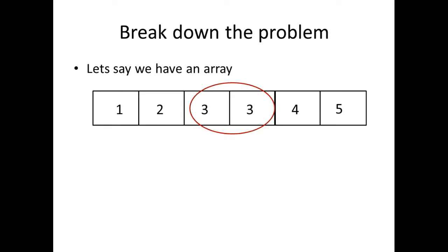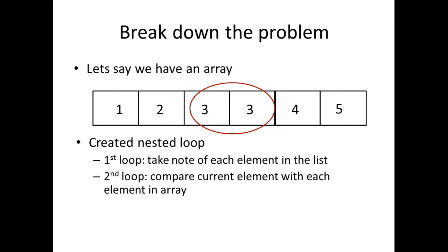How do we go about determining if an array has duplicate values? Well, the first thing that may come to mind is to create a loop. A loop would iterate through each element within this array, and we'll be able to take note of each element. But we want to think about this a little bit deeper, and that brings me to nested loops. When we're dealing with nested loops, it's just a loop inside of another loop. The first loop, when we're iterating through this array, would take note of each element within the list.